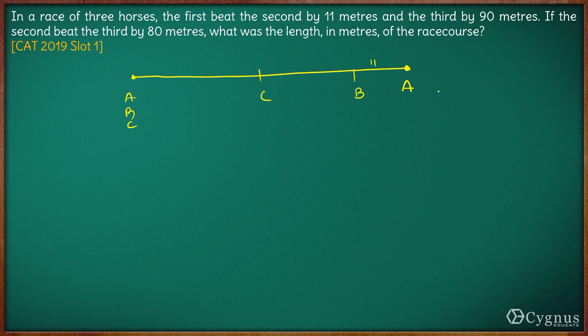This total distance is 90. So 90 minus 11 is 79 meters. The distance between B and C is 79 and distance between A and B is 11 meters.